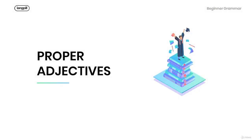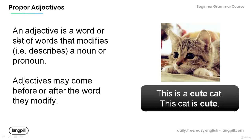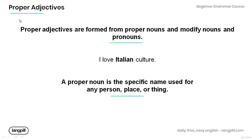Welcome to this tutorial. Today we're going to talk about proper adjectives. Remember that an adjective is a word or set of words that modifies — in other words, describes — a noun or pronoun. Note that adjectives may come before or after the word they modify. For example, in 'This is a cute cat,' the adjective 'cute' modifies the noun 'cat' and comes before it. In 'This cat is cute,' the adjective comes after the noun.